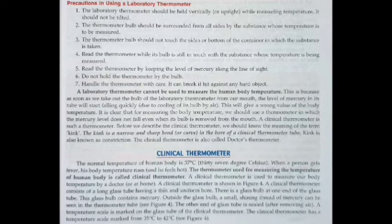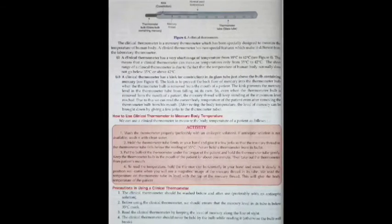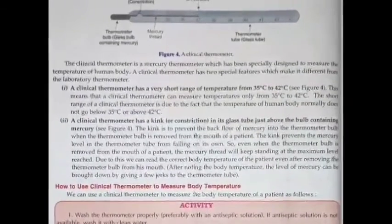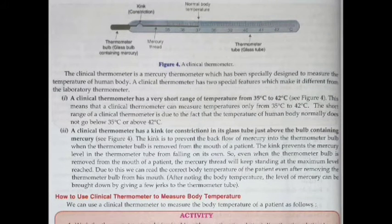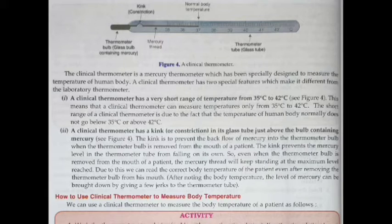What is a Clinical Thermometer? The thermometer used for measuring the temperature of the human body is called a Clinical Thermometer. Its readings range from 35 degree Celsius to 42 degree Celsius. It has a kink — a bend — which prevents the mercury from flowing back quickly, so we can read it after removing it from the mouth.